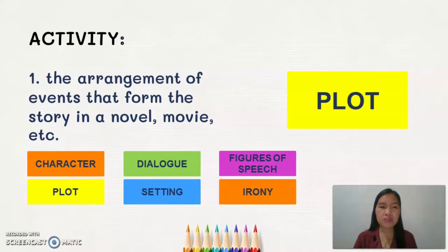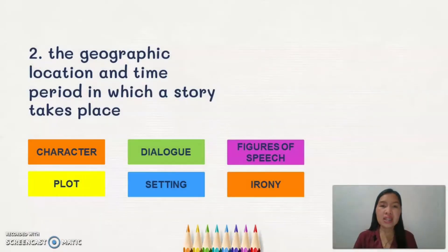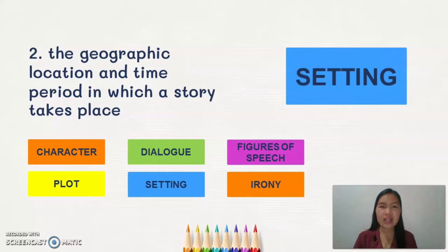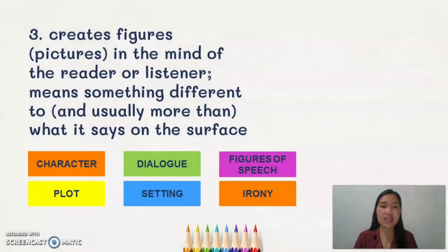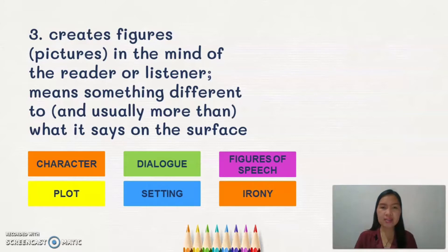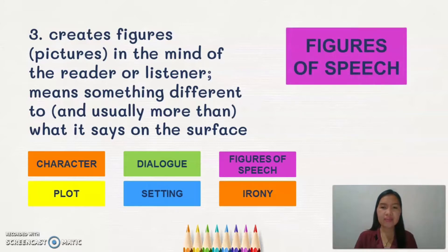Let's proceed to number two. This is the geographic location and time period in which a story takes place. Correct! This is setting. What about number three? This creates figures or pictures in the mind of the reader or listener, and this means something different — usually more than what it says on the surface. Correct! It's figures of speech.